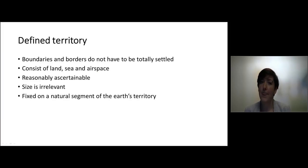Well, there is no criteria in the sense that the boundaries must be fixed. And still in international law, many disputes between states relate to boundaries. The territory of a state can consist of land, of sea and the airspace above the land and the sea. But you must have a certain core that is reasonably ascertainable. So you must be able to point to a certain part of the map and say, well, that is part of the territory of that certain state. It does not matter how big the state is. So the size is irrelevant. However, the state must be fixed on a natural segment of the Earth's territory. And that means that a platform, although its pillars are connected to the Earth's territory, a platform does not meet the criteria for statehood.